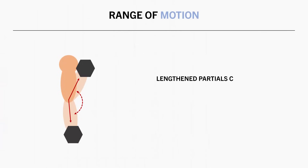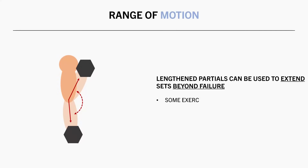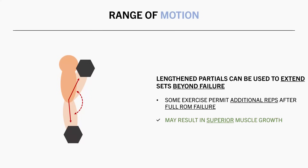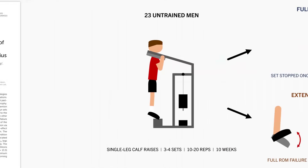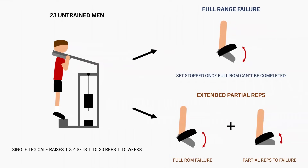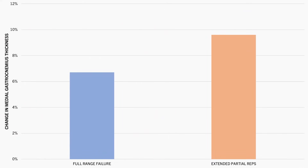Another potential application for lengthened partials is as a way to extend a set beyond failure. For exercises where we are significantly stronger in the lengthened range, we can usually perform additional reps in the lengthened position after reaching failure using a full range of motion, and this may allow us to achieve even greater muscle growth. For example, this study compared the effects of performing calf raises using either full range of motion to failure, or by performing additional partial reps after full range failure was reached. It was found that gastrocnemius muscle thickness increased to a slightly greater magnitude in the leg performing extended sets compared with full range of motion training.